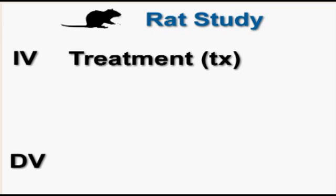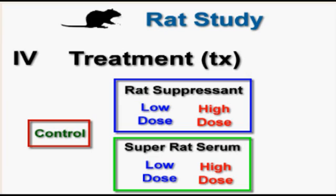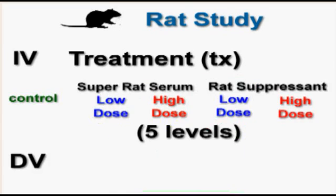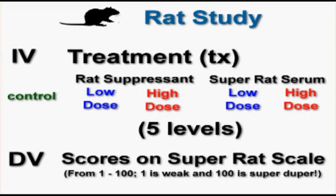Our IV is going to be treatment — what type of serum each rat gets. We have control, low and high dose of super rat serum, and low and high dose of rat suppressant. We don't have any other IVs, so treatment is our one IV, giving us five total levels. For our DV, we're measuring how super these rats are on an arbitrary super rat scale of 1 to 100, with 1 being Pinky and 100 being Splinter. Since we're measuring our DV with scores, this is continuous data. With one IV and one DV, you'll be working with a one-way ANOVA.